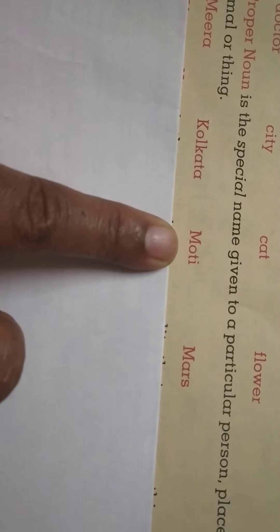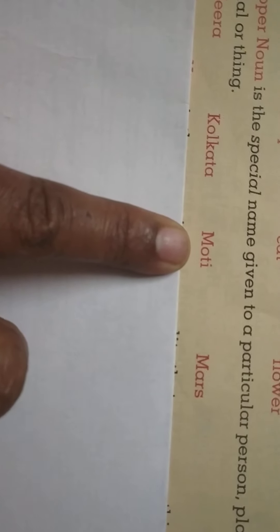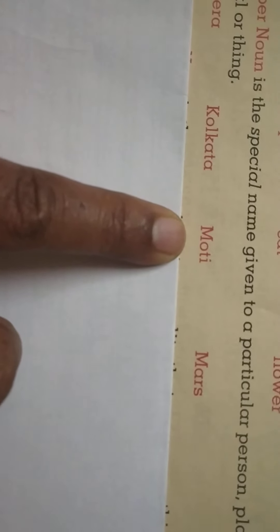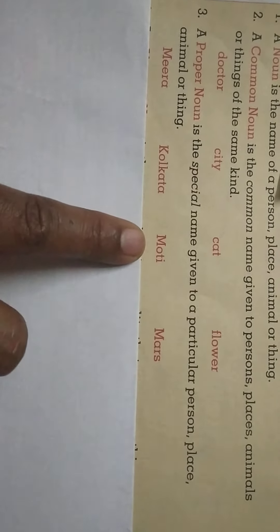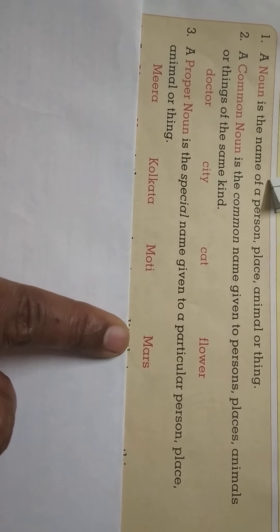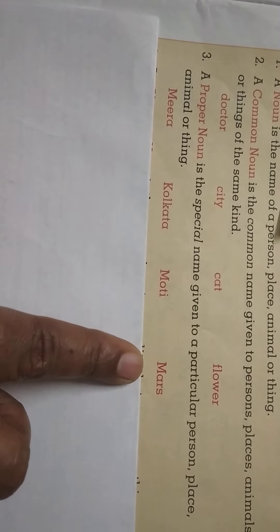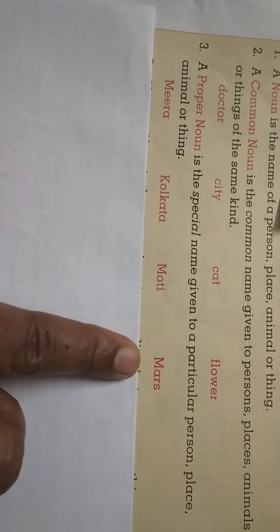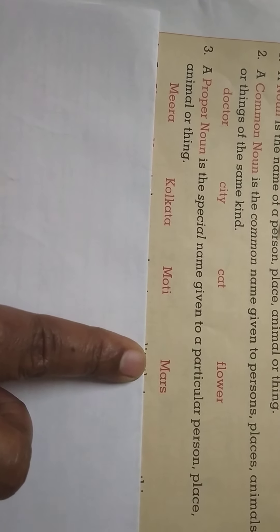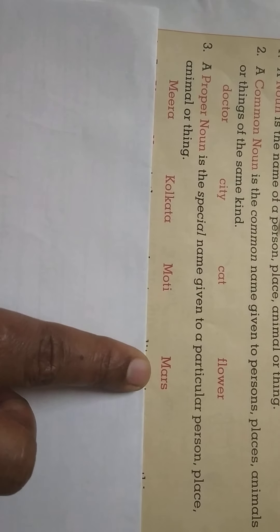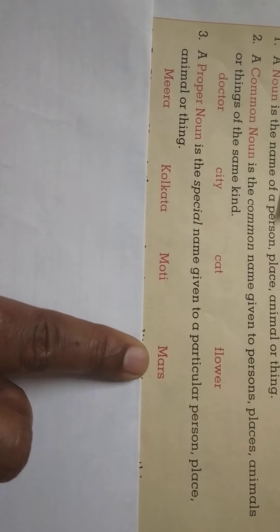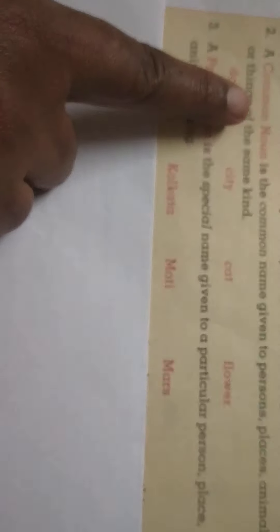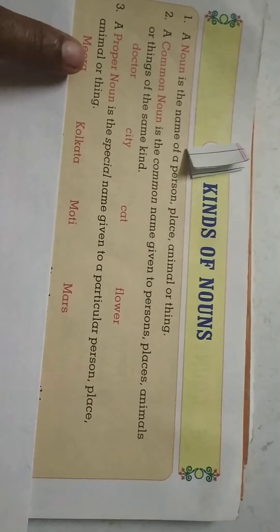Next is 'Moti' — we know that this name is usually given to a dog. Moti is the name of a special dog. We give names to dogs like Tommy, Tuffy, but Moti is a name we use for a dog we keep as a pet in our house. Next is 'Mars' — we know that in our galaxy there are many planets, like our Earth, but Mars is the name of a special planet. So I hope you now understand what is common noun and what is proper noun.